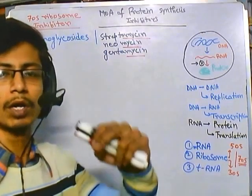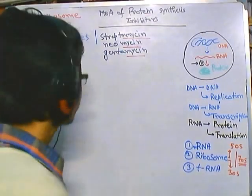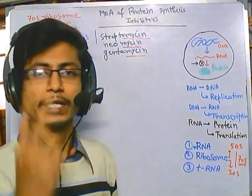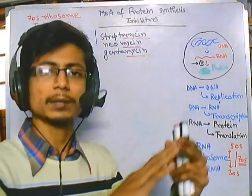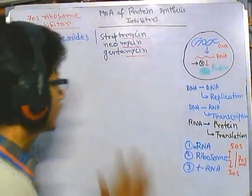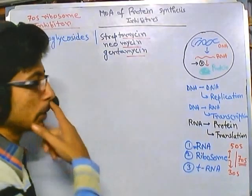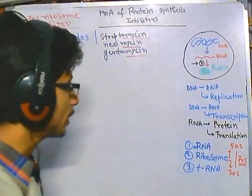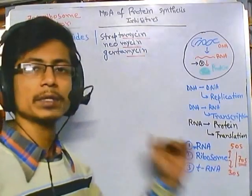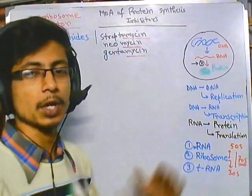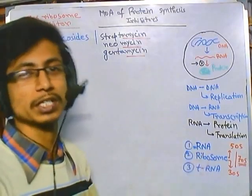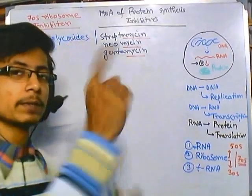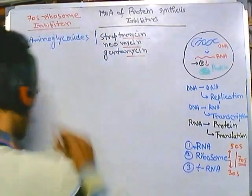The 70S ribosome inhibitors interact with the translation or protein synthesis process at two different stages: one is the beginning of protein synthesis and another is the ending. To understand their mechanism of action, you need to understand the initiation and termination of translation. The 50S and 30S subunit inhibitors interfere with the middle point — the elongation and translocation phases — but 70S inhibitors interfere with the start and end of protein synthesis.